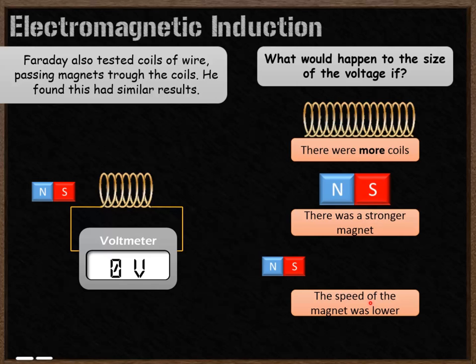If the magnet was completely still, there would be no electricity generated, even if it was located right in the middle of this coil of wire. The magnet has to be moving to generate electricity. The faster it moves, the more electricity it generates.